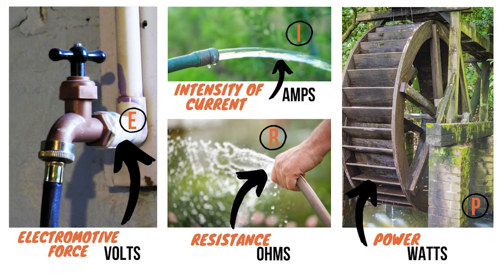That might have been an intimidating set of vocabulary. Let's break down each one using an analogy you can more easily wrap your brain around — such as water in a hose. The electromotive force is like the pressure on a waterline. Even if you don't turn on the faucet, the water is there, just waiting to gush out. That pressure, or potential energy, is like the volts in a battery waiting at your outlet. As soon as you plug in — like turning on the faucet — the electrons come rushing out. The intensity of the current is like the speed at which the water comes out of the hose. Greater intensity means a faster rate; that speed is the number of amps on an electrical circuit.